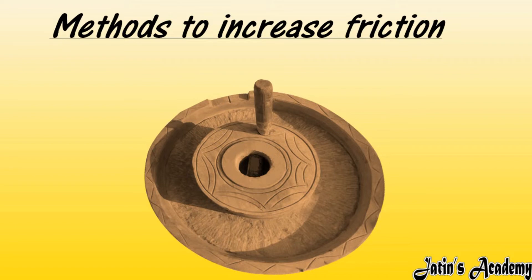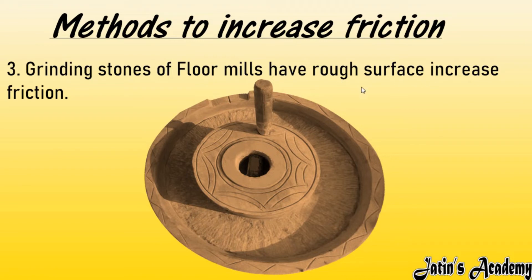The next method to increase friction: grinding stones of flour mills have a rough surface to increase friction. These surfaces are made rough so that when you put wheat into the mill, there is more friction between the wheat and the grinding stone. More friction means more force is applied, and the wheat is crushed into fine powder easily. That is why grinding stones of flour mills are made rough.